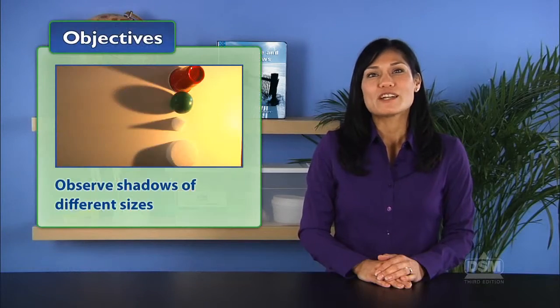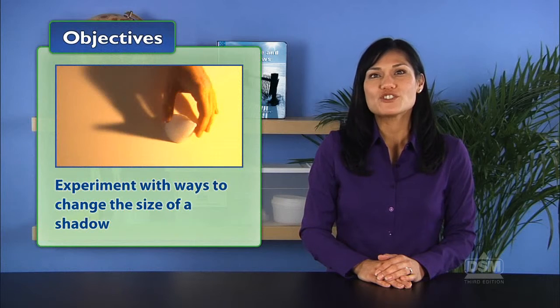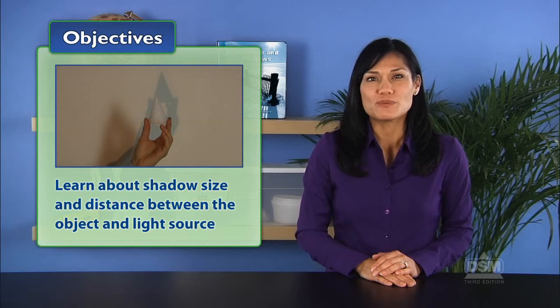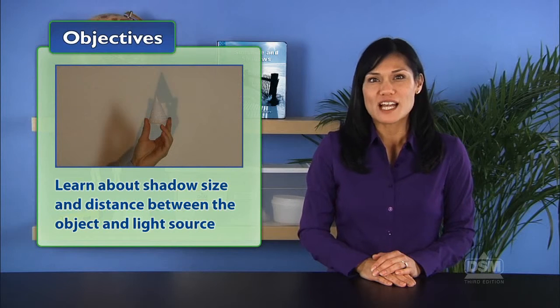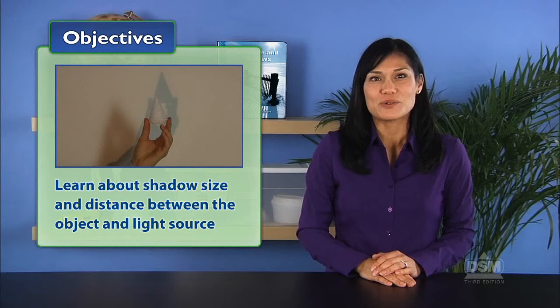In Activity 8, Shadows Big and Small, students observe shadows of different sizes and experiment with ways to change the size of a shadow. Students then learn the relationship between shadow size and distance between the object and light source.